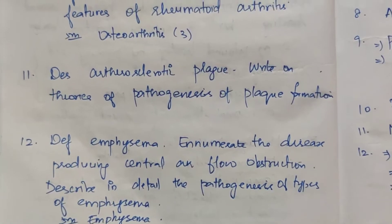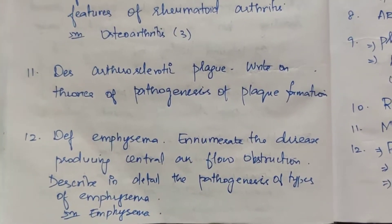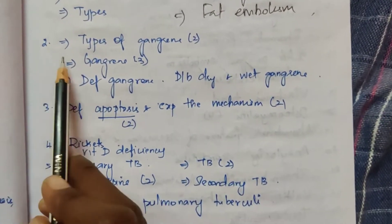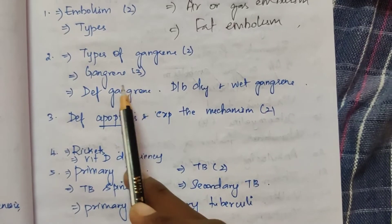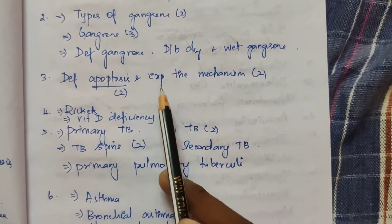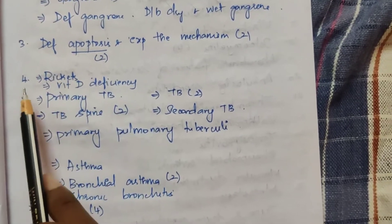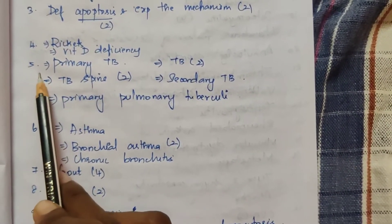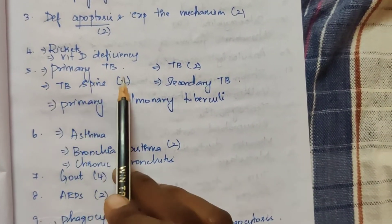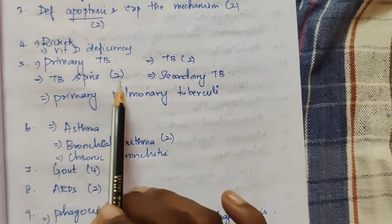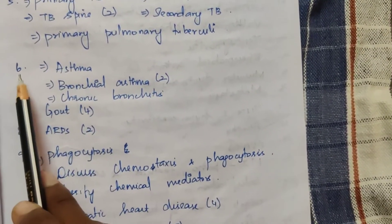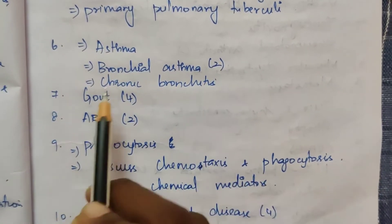Now for the 5-mark pathology questions. First: embolism — appeared 2 times, including air or gas embolism and fat embolism. Second: gangrene types — appeared 2 times, gangrene — 3 times. Define gangrene, differentiate between dry and wet gangrene. Third: define apoptosis and explain the mechanism — appeared 2 times. Fourth: rickets and vitamin D deficiency. Fifth: primary TB — appeared 2 times, TB spine — appeared 2 times, secondary TB, and primary pulmonary tuberculosis.